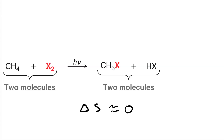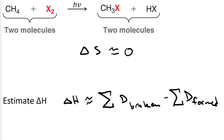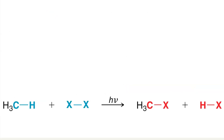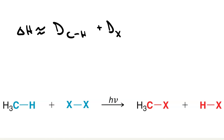Now let's estimate the delta H. Delta H will approximately be the summation of the bond dissociation energies for the bonds that are broken, minus the same summation for the bonds that are formed. The bonds broken are shown in blue, the bonds formed are shown in red. So delta H approximately equals the BDE for the C-H bond, plus the BDE for the halogen-halogen bond, minus the BDE for the carbon-halogen bond, minus that for the hydrogen-halogen bond.